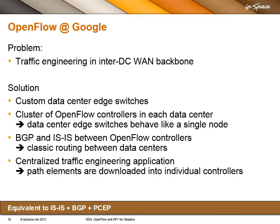I'll start with probably the best published OpenFlow use case, which is OpenFlow at Google. The problem they had was a traditional traffic engineering problem. It's really hard to solve that problem with high link utilization through a distributed mechanism. If you don't believe me, just go and browse through past RIPE and NANOG presentations.